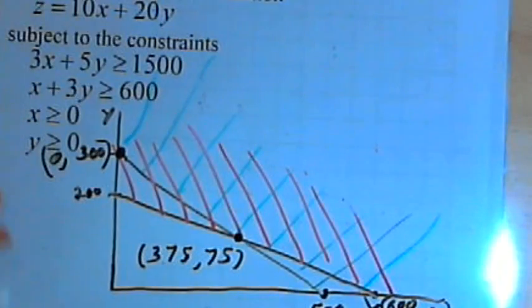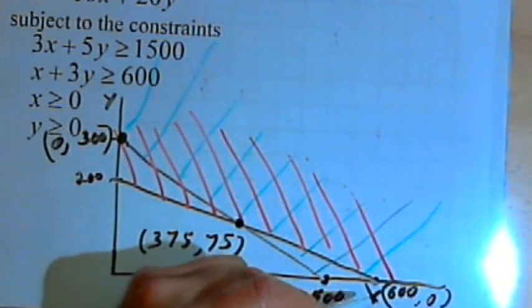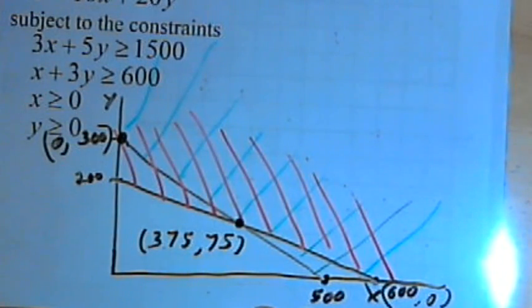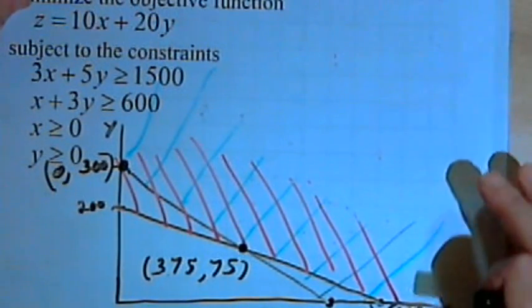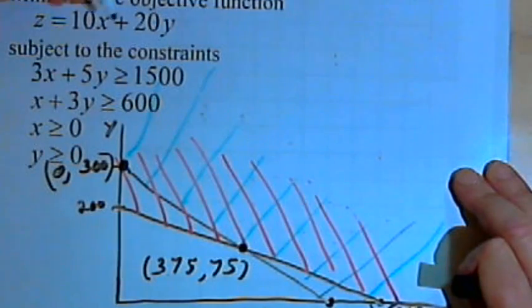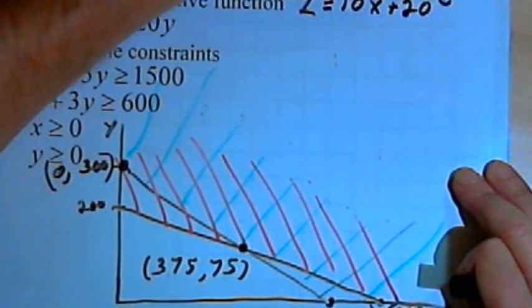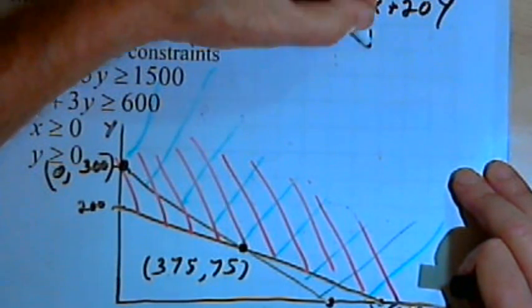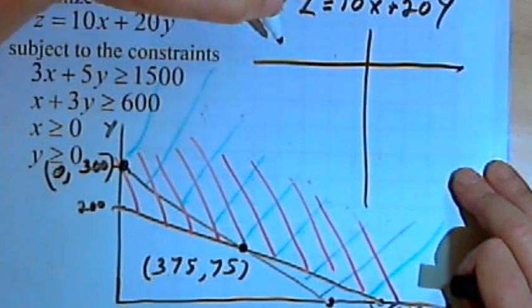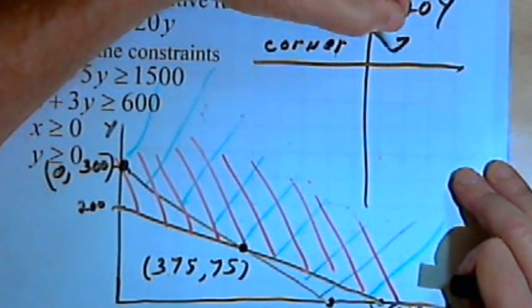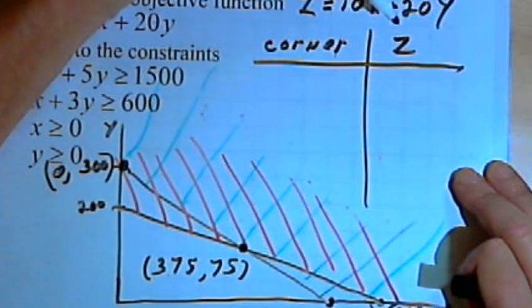Now what we want to do is find which of those three points, which of those three corners, are going to give us the smallest value for z. So let's rewrite that objective function. That's z equals 10x plus 20y. And I'll make a table where I list the corner points and what z value I get at that point.